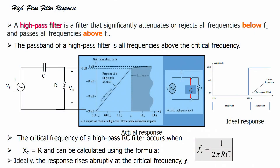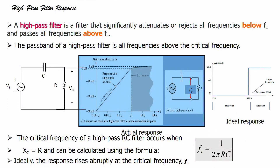A high pass filter is a filter that significantly attenuates or rejects all the frequencies below FC and passes all frequencies above FC. So, what is that filter? A filter where all frequencies below FC it will reject, while above FC it will pass.